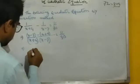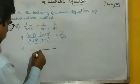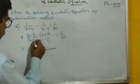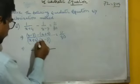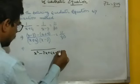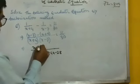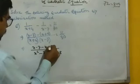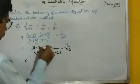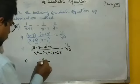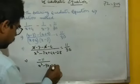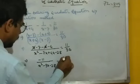Expanding the denominator: x squared minus 7x plus 4x minus 28, which is x squared minus 3x minus 28. The numerator is x minus 7 minus x minus 4 equal to minus 11. So we get minus 11 over (x squared minus 3x minus 28) equal to 11 by 30.